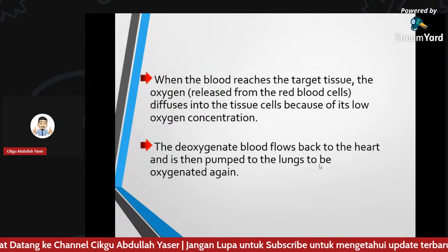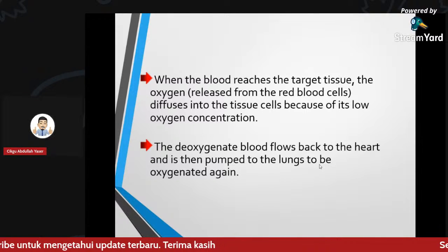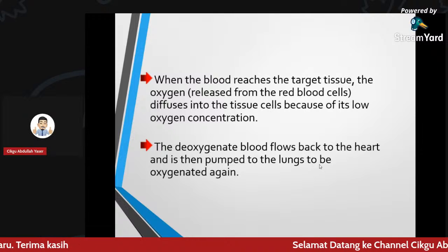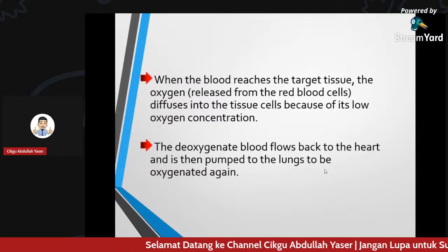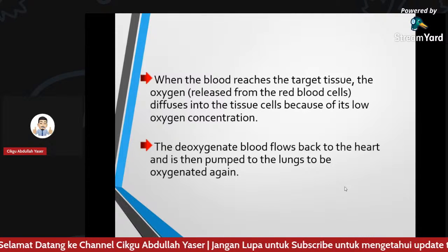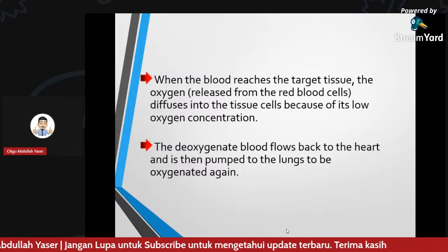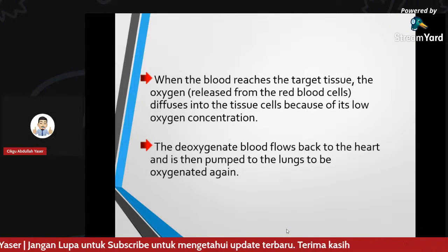When the blood reaches the target tissue, oxygen is released from the red blood cell and diffuses into the tissue cells because of the low oxygen concentration there. The deoxygenated blood flows back to the heart and is then pumped into the lungs to be oxygenated again. This process always circles back to the lungs.